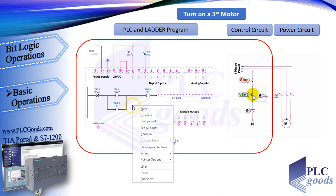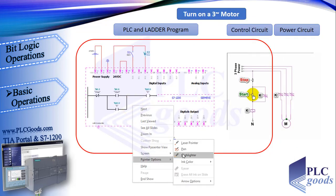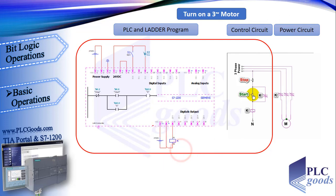Although the second and third lines are different, their performance is similar, because of the different push buttons used in PLC wiring. Now let's see this project which we've done before. Because all used push buttons were normally open, the ladder program is similar to the industrial control circuit. According to the previous slide, if a normally close push button is used in PLC wiring instead of a normally open one, we must change its related contacts to avoid changing the PLC performance.